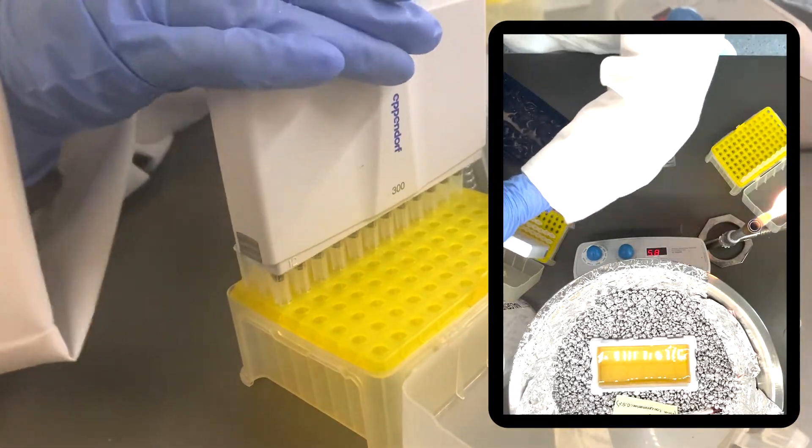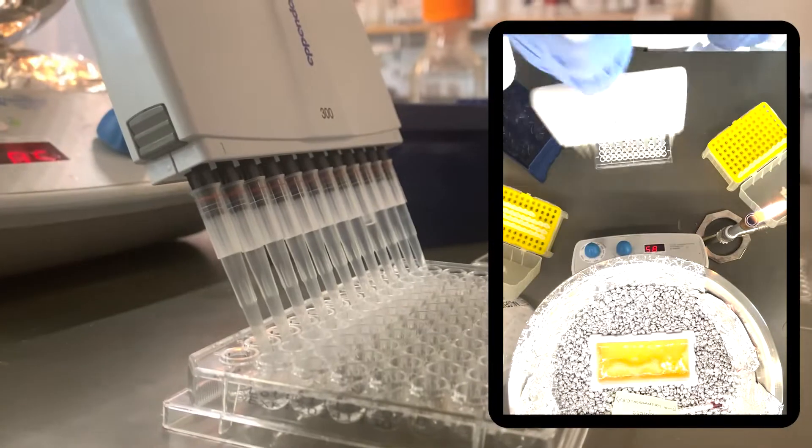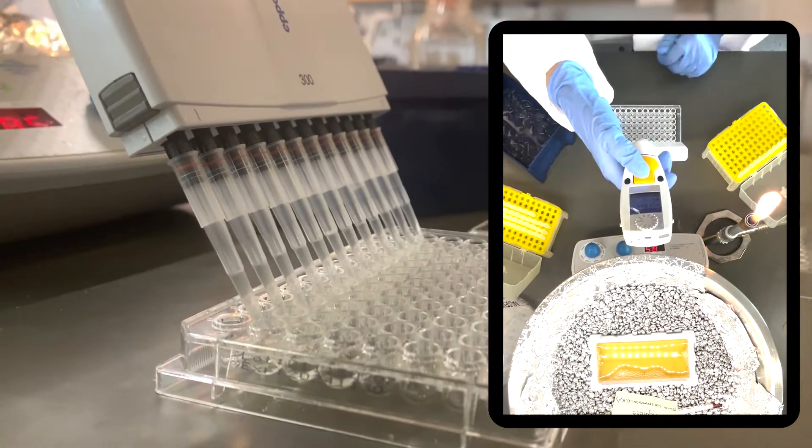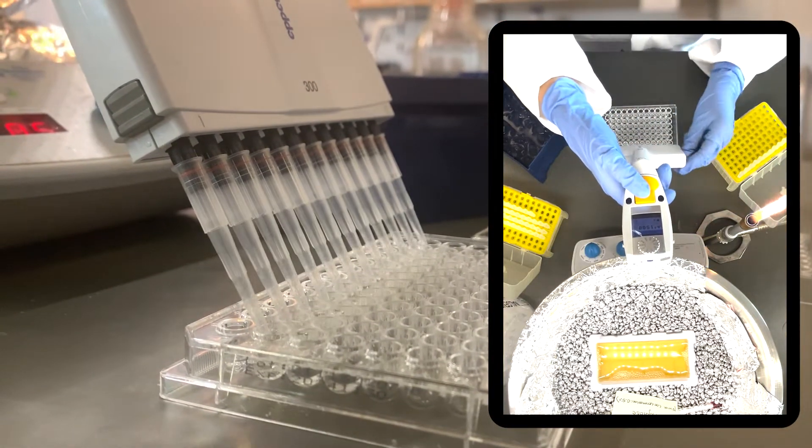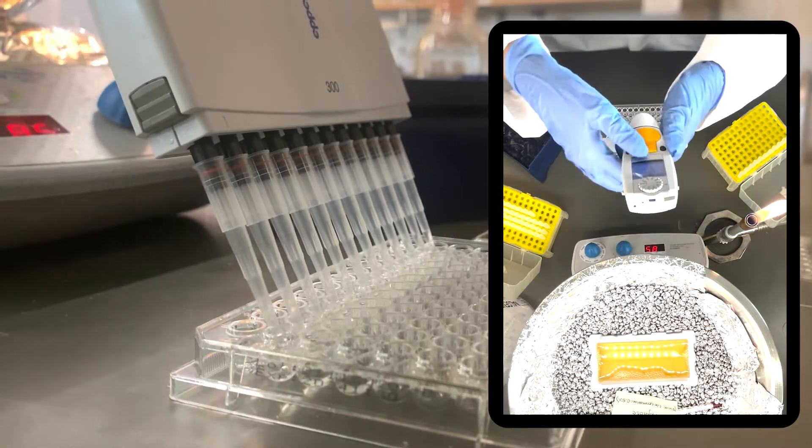For each row using the 12 channel pipetter, aspirate the agar and dispense it into the plate with your conditions. Pipette and mix at least two times and then pull up the agar back into the pipette tips. The volume pulled up should be less than the total volume of media in each well.